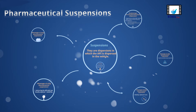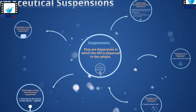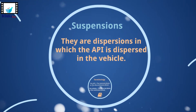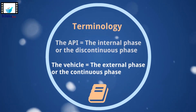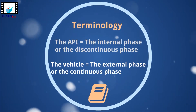Pharmaceutical suspensions are commonly referred to as dispersions in which the API is dispersed in the vehicle. The API might also be termed the internal phase or the discontinuous phase. You might also come across materials that give the vehicle the term of external phase or the continuous phase.